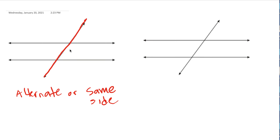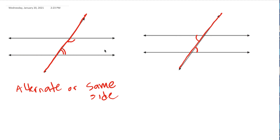When we ask about the side, we mean the side of the transversal — the cutting line. Same side means both angles are to the right, for example — they're on the same side. Alternating means one angle is on the left and one is on the right. So we ask ourselves: is it alternate, or is it on the same side? That will be one part of the name. Same side means both are on the same side of the red line; alternating means one on the left, one on the right — that is called alternate.